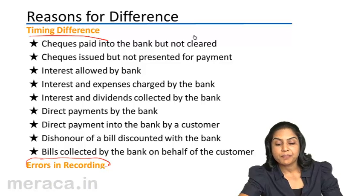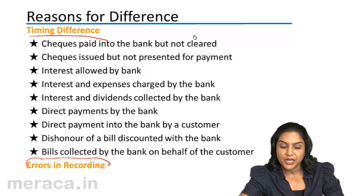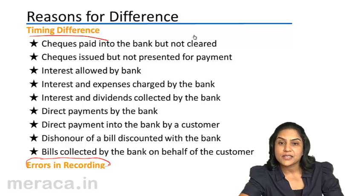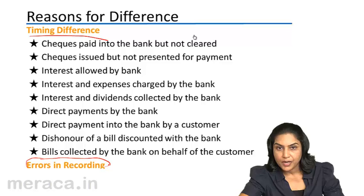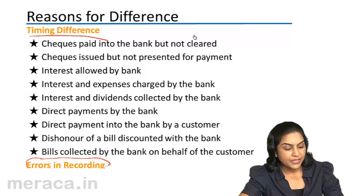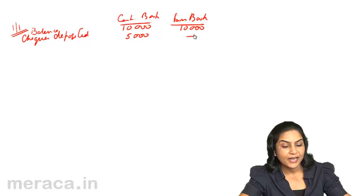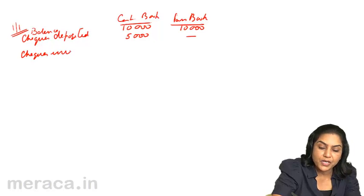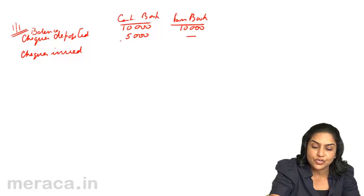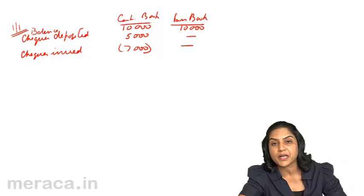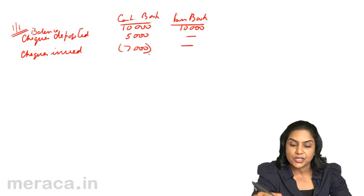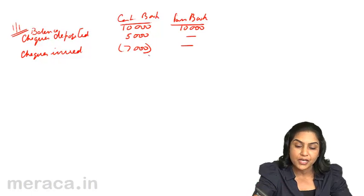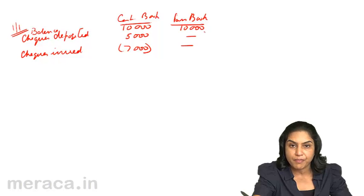Cheques issued but not presented for payment: the moment we issue a cheque, we record it in the cashbook and our bank balance comes down. But this would be recorded in the passbook only later. Let us assume cheques for around 7,000 rupees were issued — so our cashbook balance changes but the passbook balance remains at 10,000.